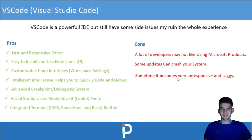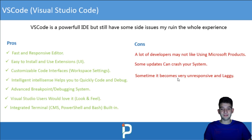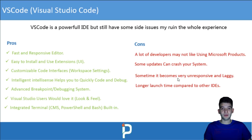Sometimes VS Code becomes unresponsive and laggy. If you have lower RAM — like 4 or 8 gigs — and you open a lot of windows and install a lot of extensions in your workspace, you'll experience pretty bad hang-ups, crashes, and things stopping working. Make sure to try it first and give it a shot.